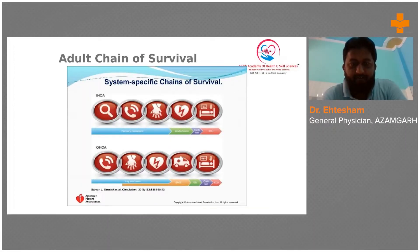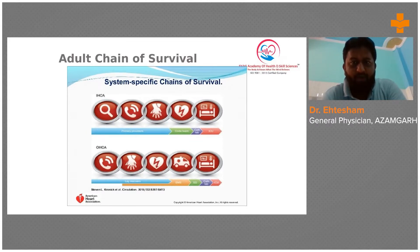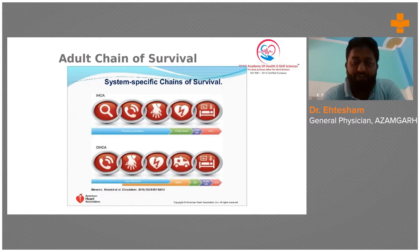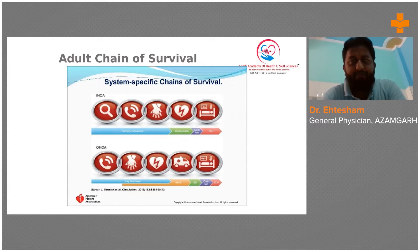What you see on the screen is about the adult chain of survival. There is one more link — the last link known as recovery — but before that, there are five important links. The very first is prevention and surveillance, next is activation of code blue, then comes high quality CPR, followed by rapid defibrillation.